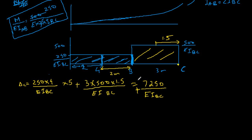The deflection is positive because the elastic curve shows compression at the top, meaning positive moment. If we had a triangle and rectangle instead, we'd calculate the triangle's area and find its centroid — one-third from one side — then drag it to point C. The key concept is always: take the area of the M/EI diagram and multiply by the distance to the point where you're calculating deflection. That's how you find deflection using the moment area theorem.